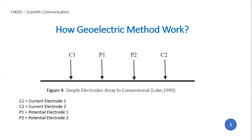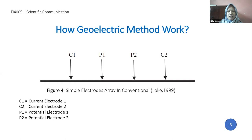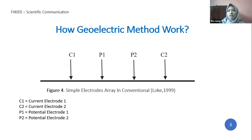When the position of the electrodes changes — when the current electrode distance is increased — the electric voltage and the potential electrode also change according to information about the type of rocks and the positive effects of injecting electric current at greater depth.